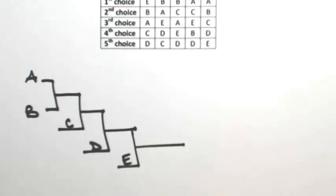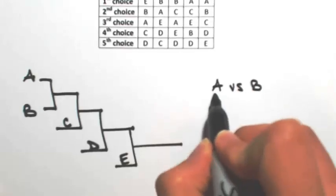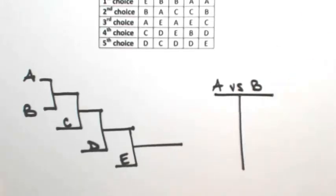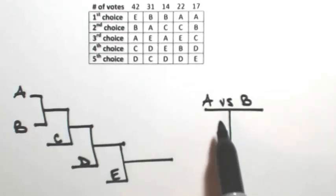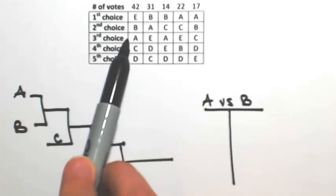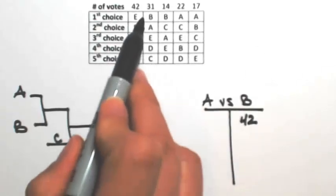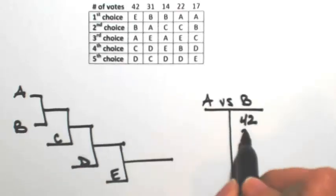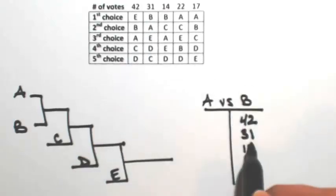So the first thing we're going to do is A versus B. In each column, we're going to see which one is more preferred, A or B. In the first column, B is over A, so B gets the 42. In the next one, B again is over A, so B gets 31. In the third column again, B is over A, so B gets 14.